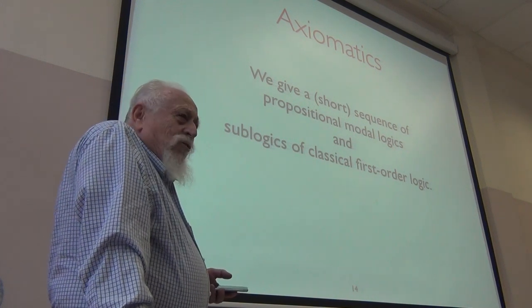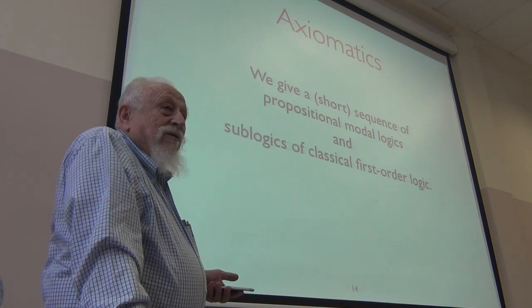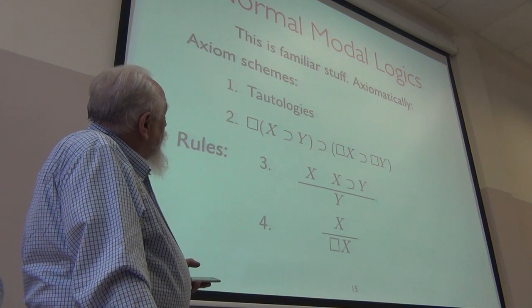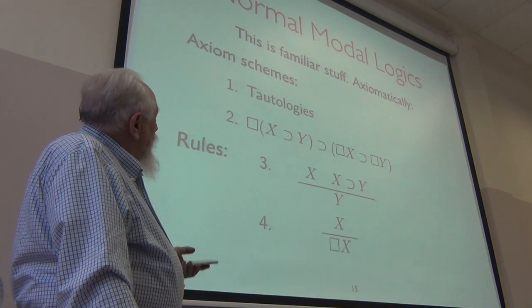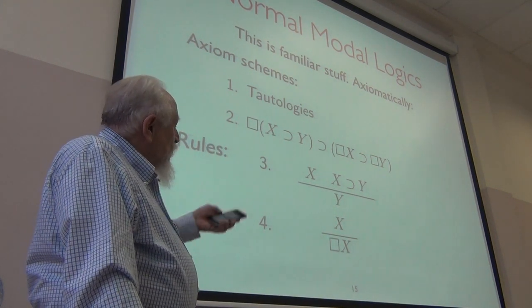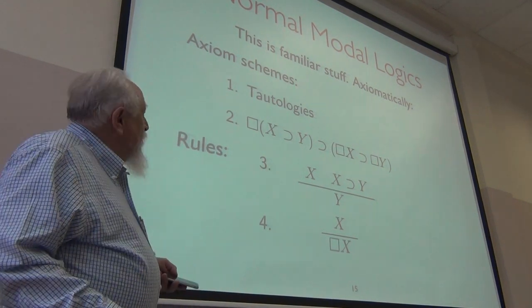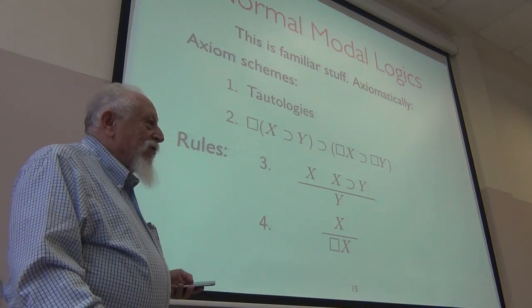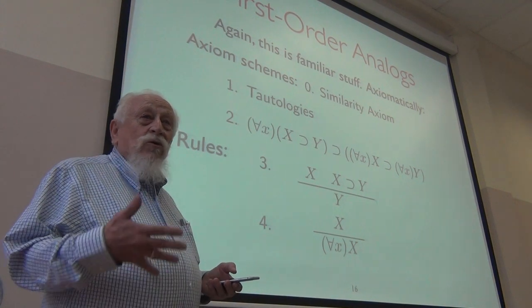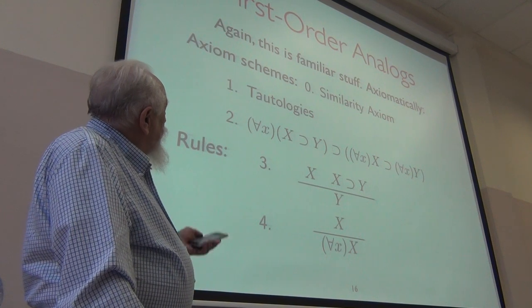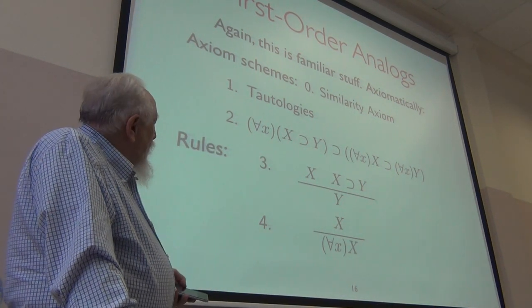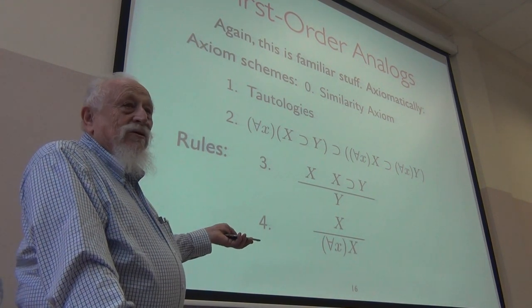So, what I want to do is start with the most natural, simple modal and quantifier systems. So, normal modal logics. And this, you're probably all familiar with. So, axiomatically, tautologies, box distributes over implications, sometimes called the K axiom. You have as rules modus ponens and necessitation. These are understood to be axiom schemes, not particular axioms. That much axiomatizes the modal logic called K, the smallest normal modal logics. The first order analogs of that, well, you have the similarity axiom, which is always there in the background. Tautologies, universal quantification distributes over implication. Modus ponens and universal instantiation. So, this is an exact parallel.